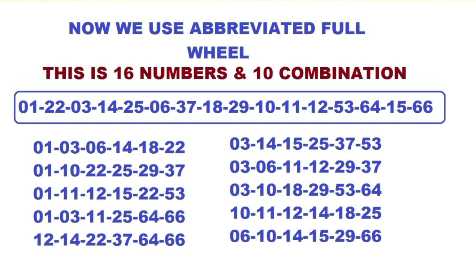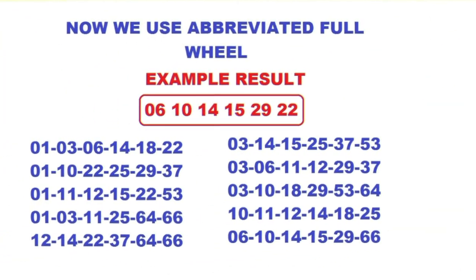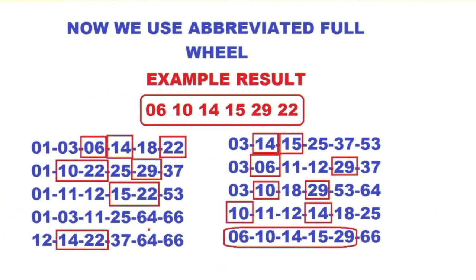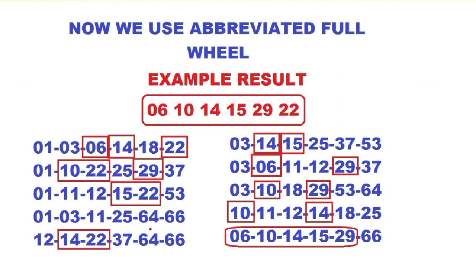By using these 10 combinations, for example a result of 6, 10, 14, 15, 29, and 22 — now we will see if this combination is very effective based on a result. As you can see, we have hit on the last combination a 5-digit win, on the first combination a 3-digit win, and on the second combination another 3-digit win. So we have 3 winnings and we almost hit a jackpot price using only 10 combinations.